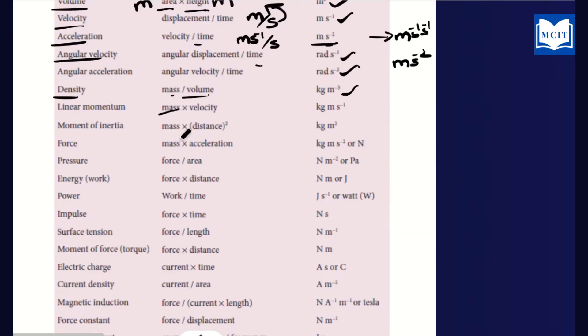Angular velocity is angular displacement divided by time — radian per second, written as radian·s⁻¹. Angular acceleration is angular velocity divided by time — radian·s⁻¹ divided by s gives radian·s⁻². Density is mass divided by volume — kg divided by m³ gives kg·m⁻³.